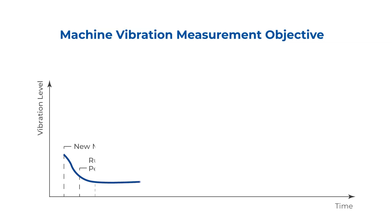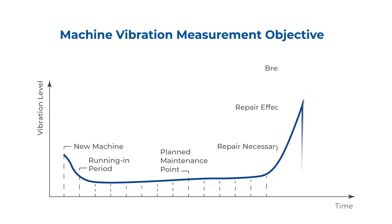Machines seldom malfunction suddenly. Indications of potential failure typically emerge well in advance, allowing for proactive measures before the machine becomes inoperable. The illustrated bathtub curve represents the relationship between vibration levels and time, showcasing this phenomenon.